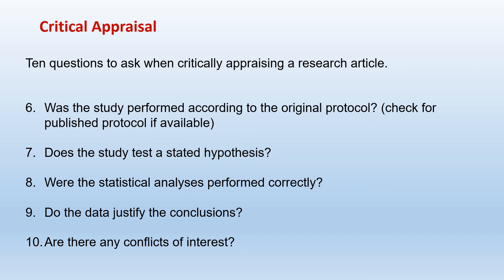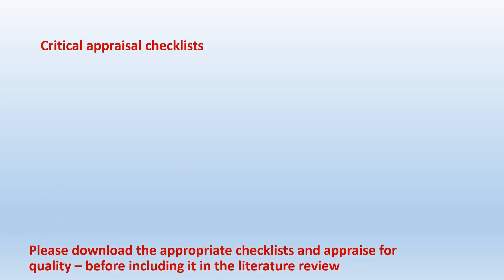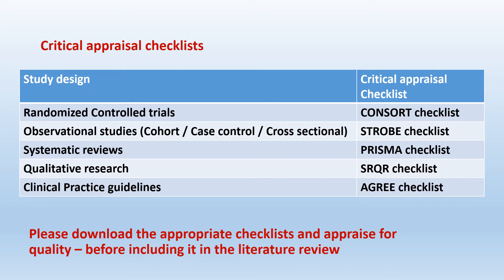These are the things you have to check while doing critical appraisal. There are some checklists available. When you are downloading a randomized controlled trial, you have to critically evaluate its quality based on the CONSORT checklist — just Google 'CONSORT checklist.' Read the randomized controlled trial and check if it is according to the CONSORT checklist. If it is, that means the quality of the article is good.